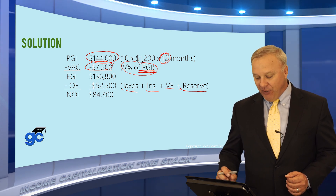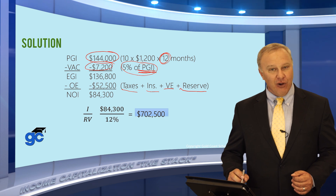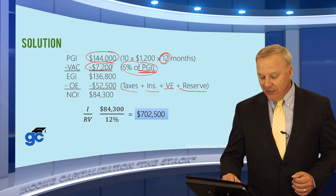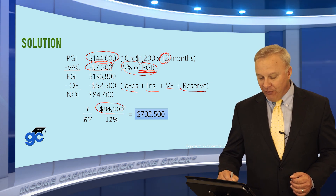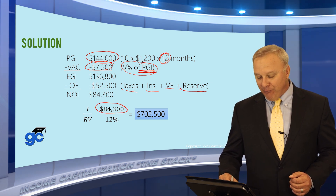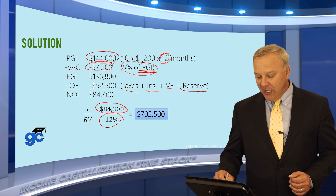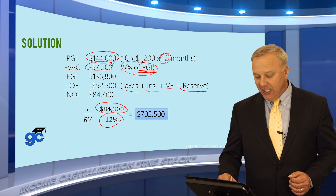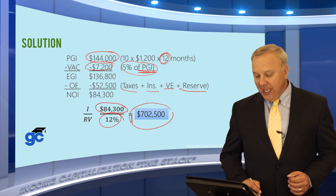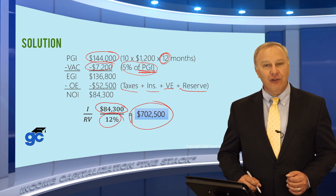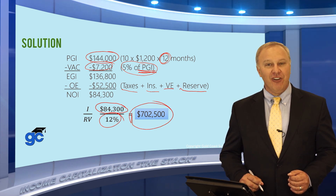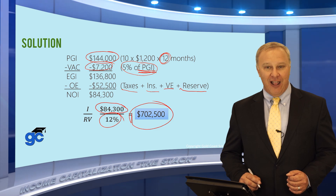Time to plug these numbers into the IRV formula. NOI is $84,300, cap rate from the question was 12%. Divide, and your value of the building is $702,500.